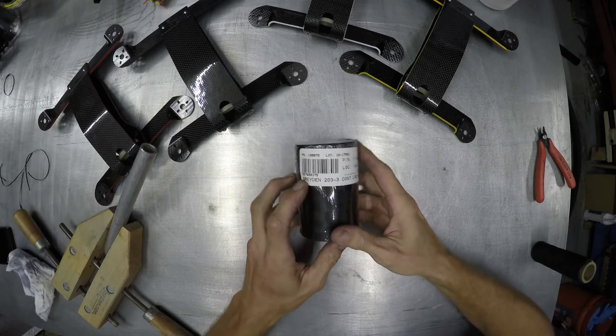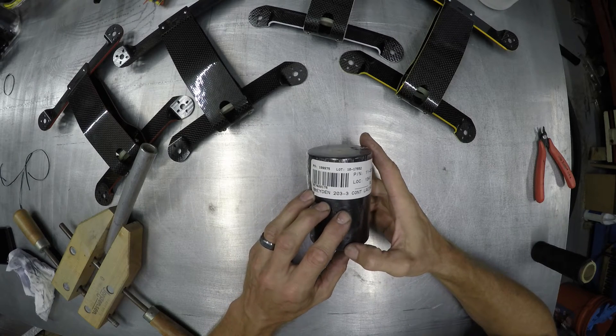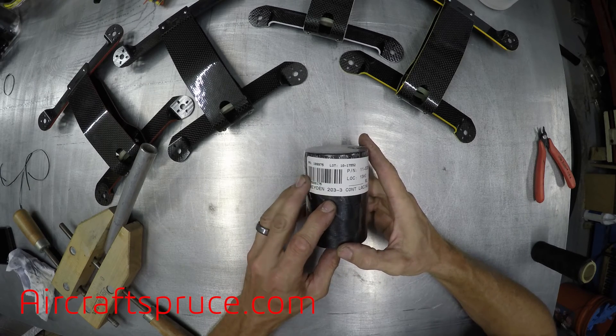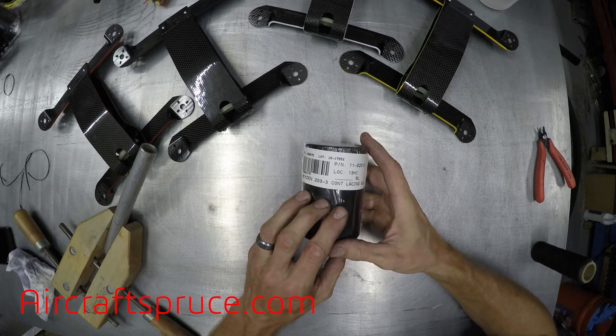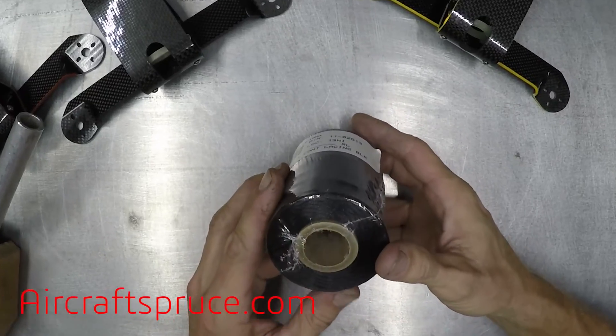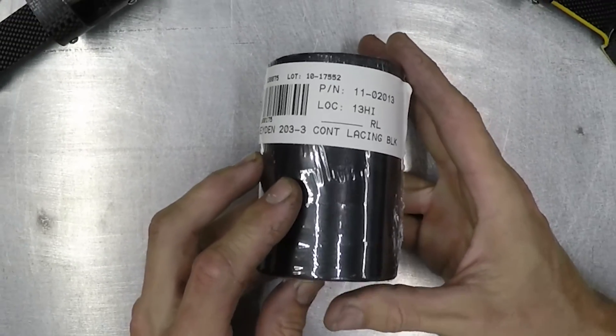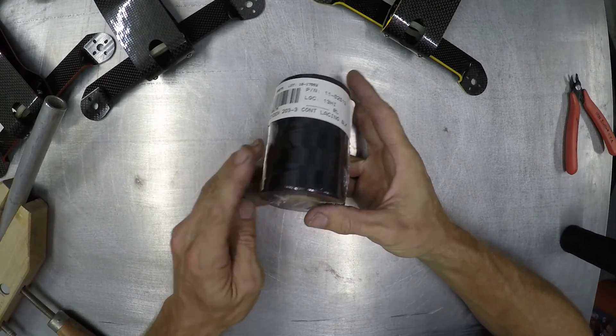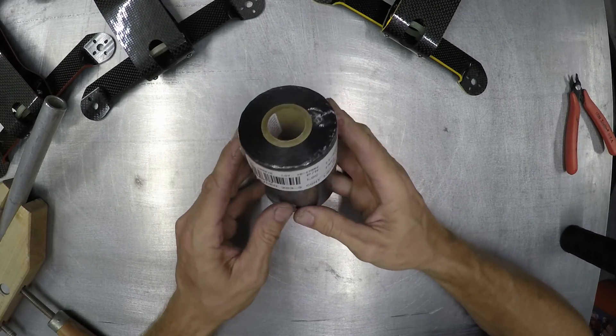Here's the product, this is Brayden Lacing Tape. This is a 500-yard roll. It's available online at aircraftspruce.com. This roll will probably build 20 plus drones or aircraft, and it's only about $22 for a roll.